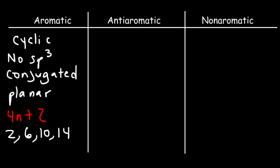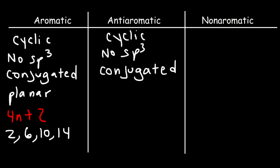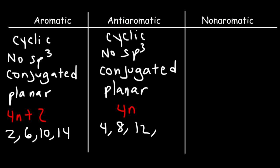The conditions for anti-aromaticity are very similar to aromaticity. The molecule must be cyclic, there can't be any sp3 carbons, it has to be conjugated with pi electrons free to move in the ring, and it has to be planar. But it doesn't follow Hückel's rule — instead it follows 4n. So when n is 1 you get 4, when n is 2 you get 8, when n is 3 you get 12. If a molecule has 4 or 8 pi electrons with these conditions met, it's anti-aromatic.